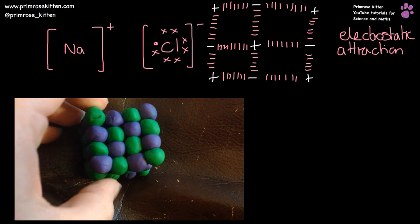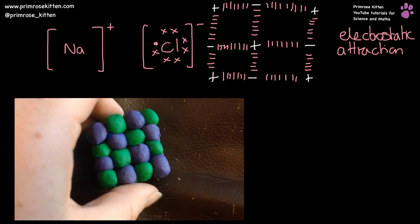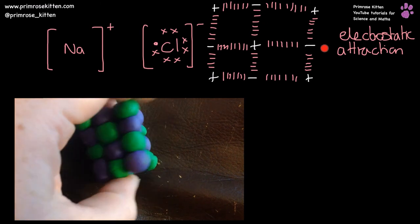So they're mainly going to be attracted to the six nearest ones. Because remember, this is a 3D lattice.